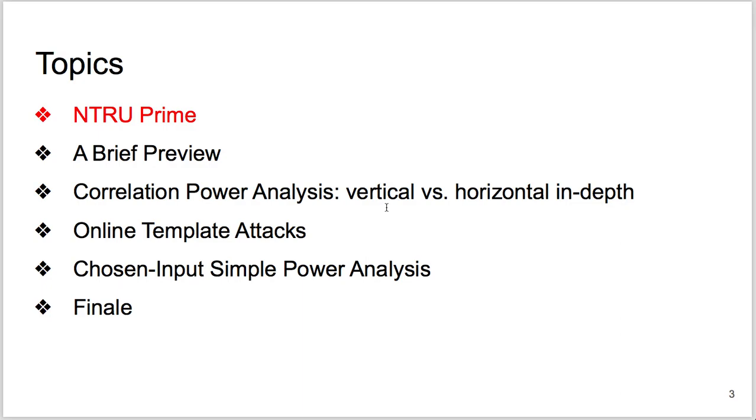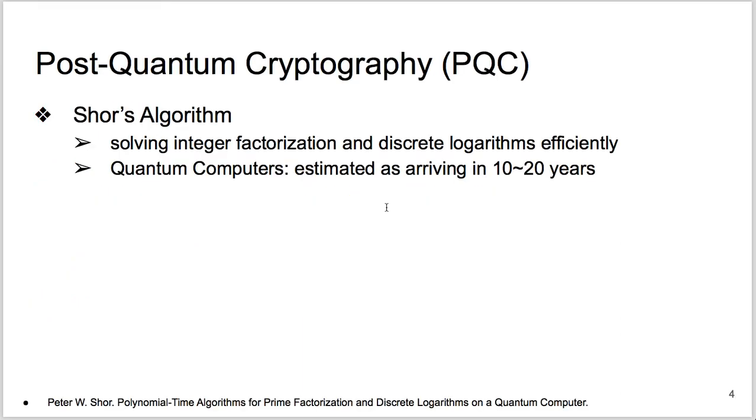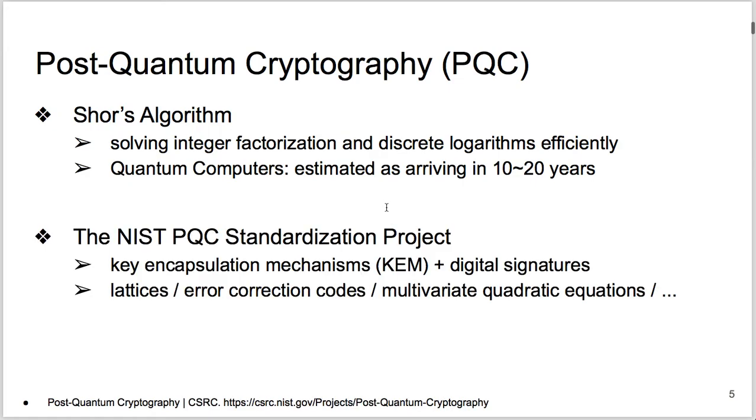NTRU Prime. Shor's algorithm can efficiently solve integer factorization and discrete logarithms, and functional quantum computers are estimated as arriving in 10 to 20 years. Therefore, NIST initiated its post-quantum cryptography standardization project in 2016. The submissions include key encapsulation mechanisms and digital signatures. We can categorize the hundreds of assumptions behind into lattices, error-correcting codes, multivariate quadratic equations, supersingular isogeny, hash functions, and some others.